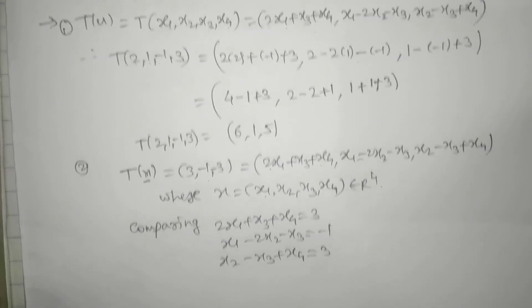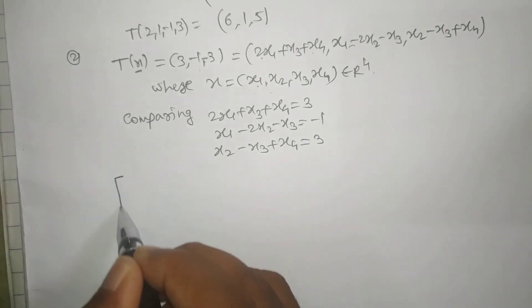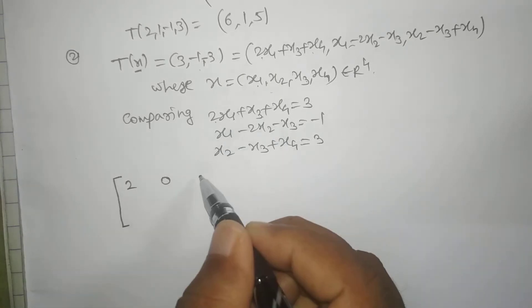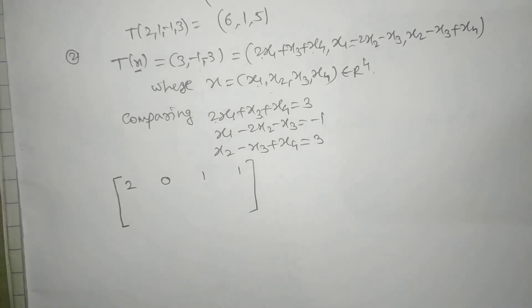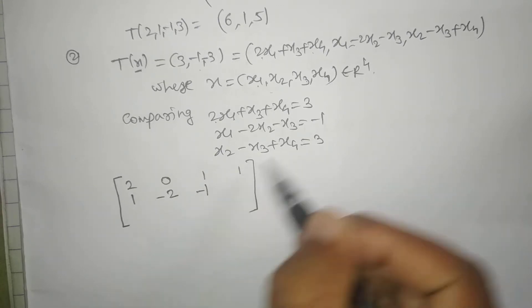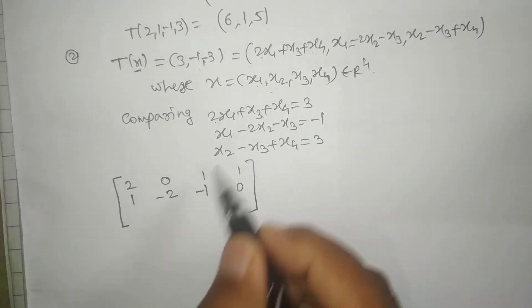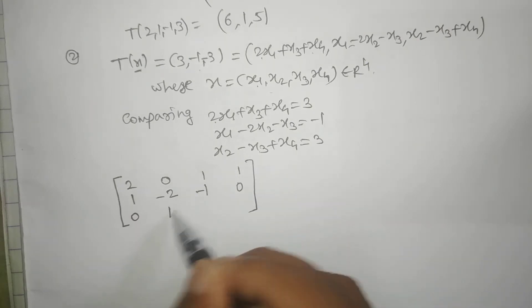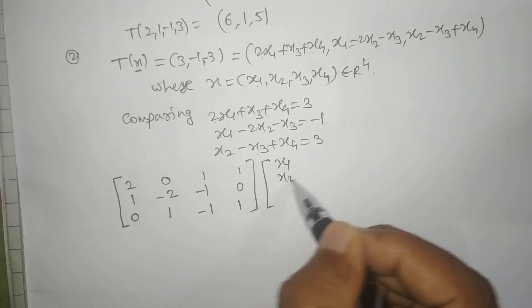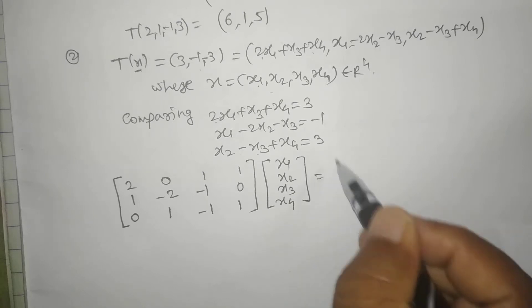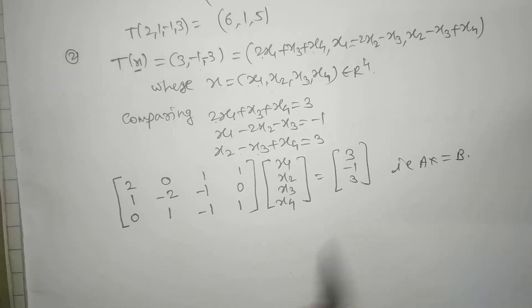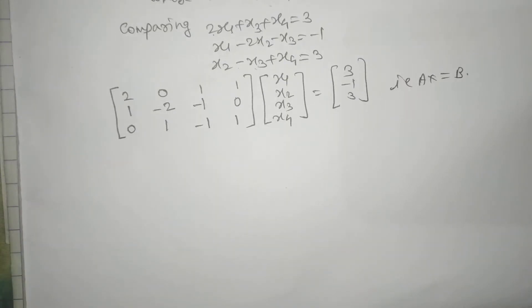We can solve this non-homogeneous system by matrix method. The coefficient matrix has row one: 2, 0, 1, 1; row two: 1, -2, -1, 0; row three: 0, 1, -1, 1. The system is Ax equals b, so the augmented matrix A|b equals [2, 0, 1, 1 | 3; 1, -2, -1, 0 | -1; 0, 1, -1, 1 | 3].